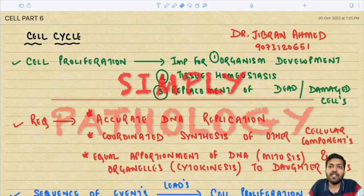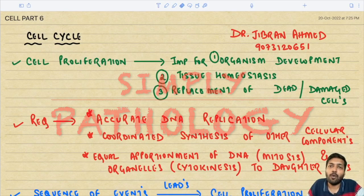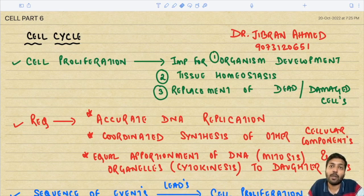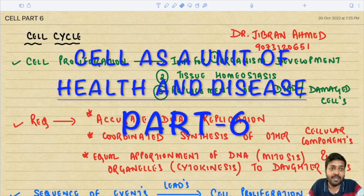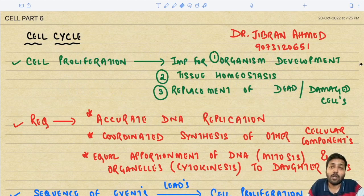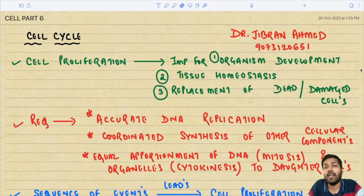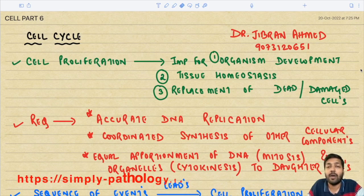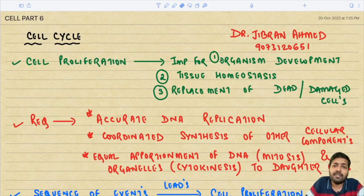Doctor Gibran Ahmad presents Simply Pathology. Today we are going to discuss the last part of 'Cell as a Unit of Health and Disease,' that is part number six. In this topic we are going to discuss the cell cycle, stem cells, and regenerative medicine.